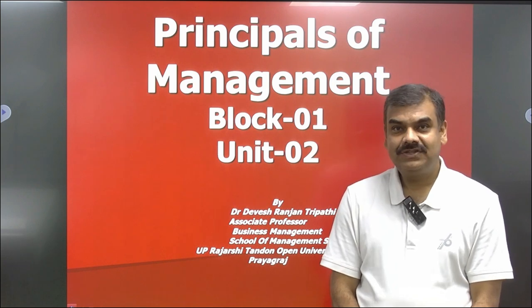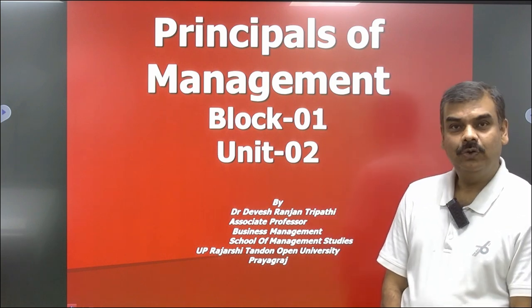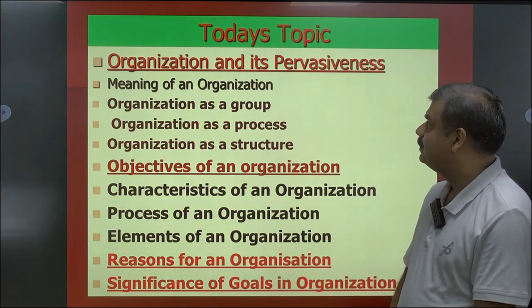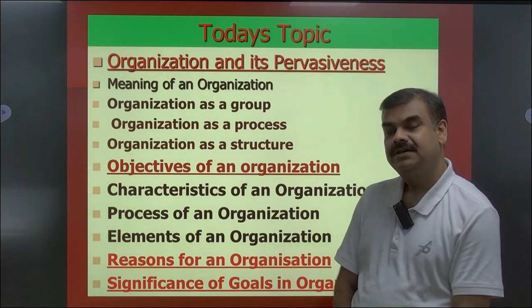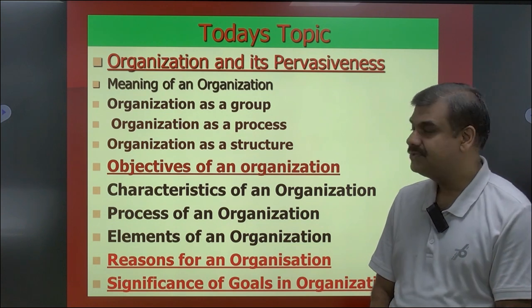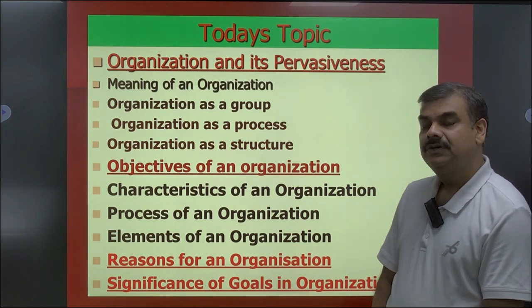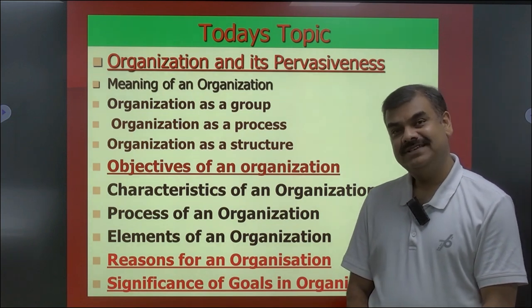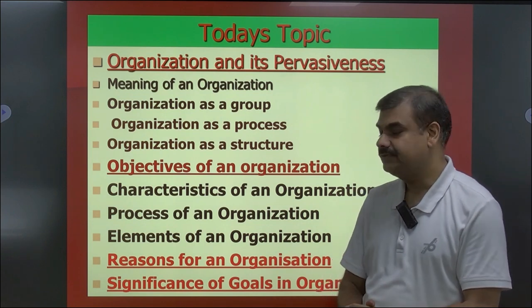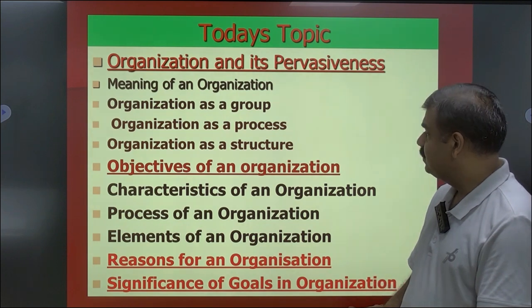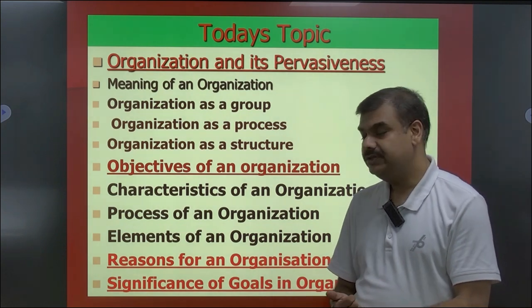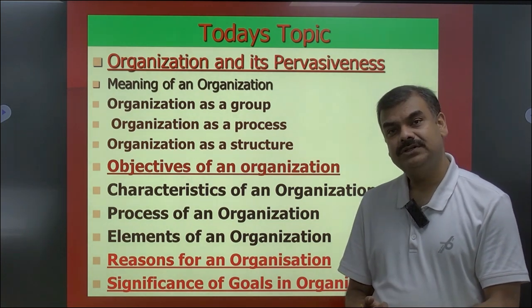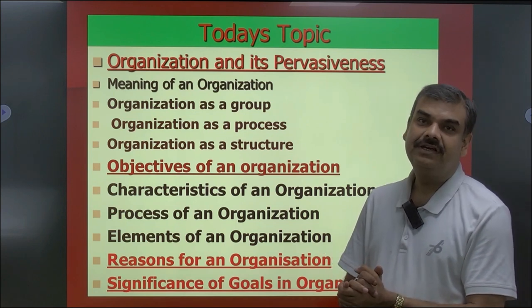We have covered the following topics. Then we shifted to Unit 2, that is organization and its pervasiveness. Under this main topic we covered sub-topics: meaning of an organization, organization as a group, organization as a process, organization as a structure, and various layers of a structure. Under the broad topic of objectives of an organization, we covered characteristics of an organization, the process of an organization, and various elements of an organization.